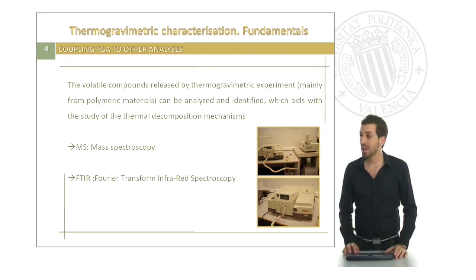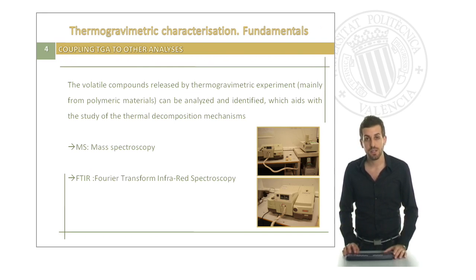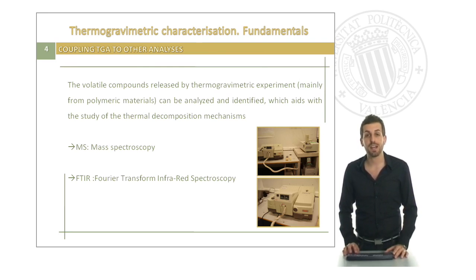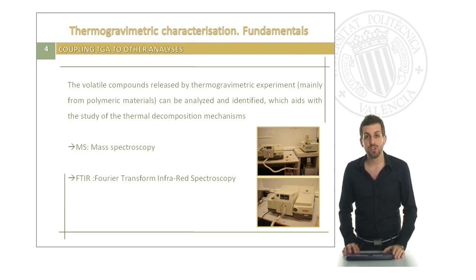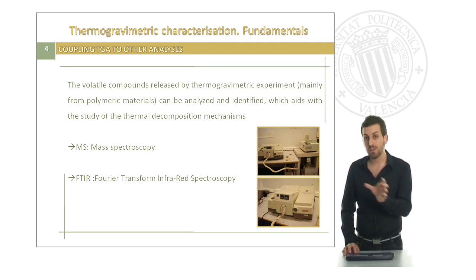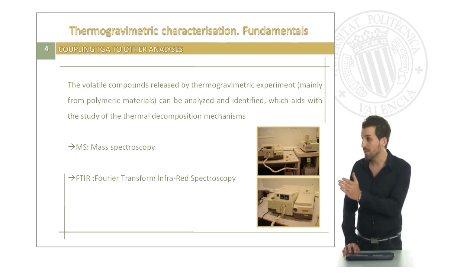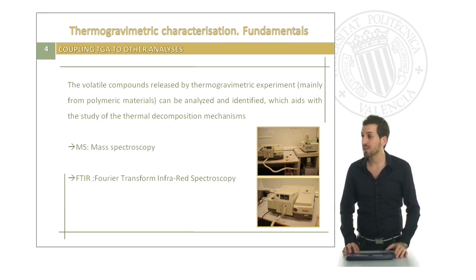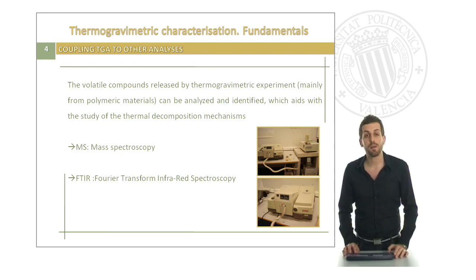Finally, if you want to analyze the composition and to identify which gases are evolved by your thermogravimetric analysis, you can couple some different analytical techniques. For example, you can use mass spectroscopy as well as Fourier transform infrared spectroscopy.